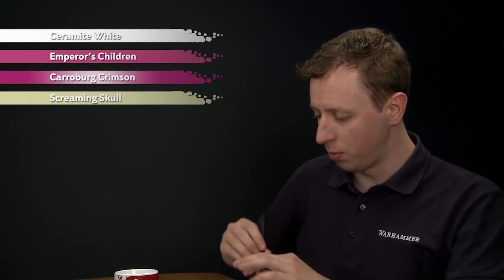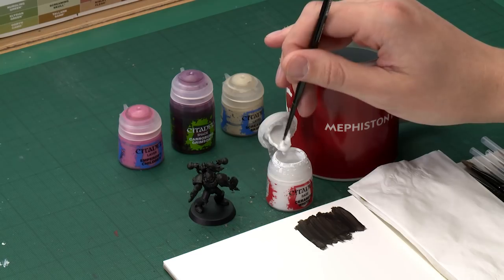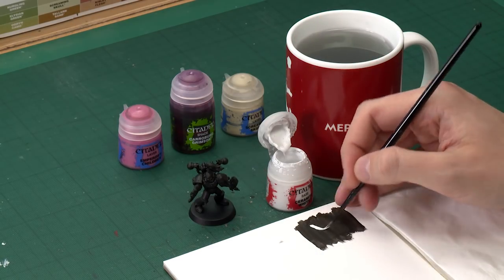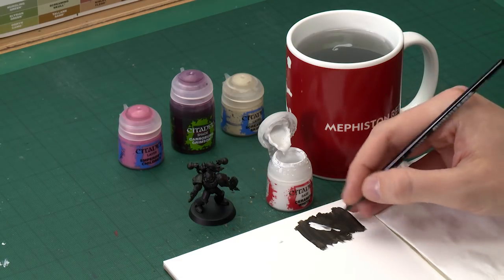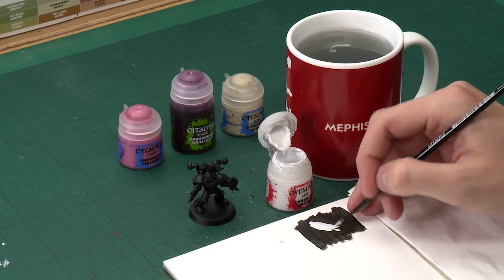Starting with Ceramite White, I'm going to apply this with a medium layer brush for lots of control. What you want to do is pick some of the panels and block them in. Thin your paint down with a little bit of water so it's nice and smooth, and when you're ready, it's just a case of picking whichever panels you want.